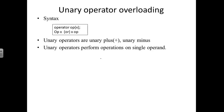Now let us move to unary operator overloading. The syntax is: keyword operator, then the operator to overload, followed by parentheses. If it is a normal operator overloading function, it will not have any arguments. But for unary operator overloading using a friend function, it will have one argument. So: normal unary operator function — no arguments; using friend function — one argument.